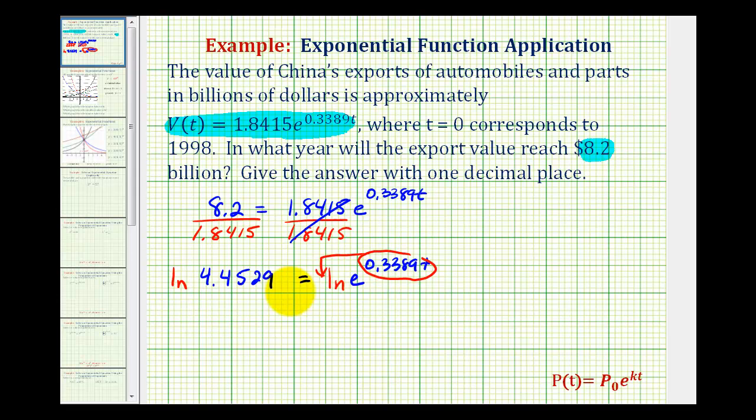And again, the reason for using common log or natural log is that we will have to use the calculator to determine the value of t. So now we have natural log of 4.4529 equals 0.3389t times natural log e, but natural log e is equal to one, since e raised to the power of one is equal to e. So this really simplifies out.